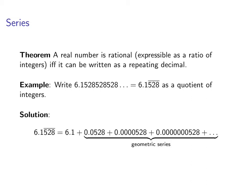So 6.1 with a repeating 528 can be rewritten like this. We'll peel off the 6.1, that's the non-repeating part, and then what's left over is 0.0528 plus 0.000528 plus 0.000000528, and so on. So not counting the 6.1 portion, the rest of it is a geometric series.